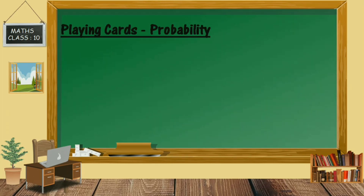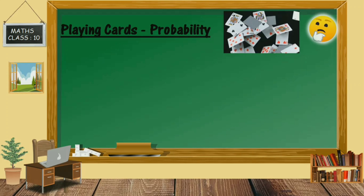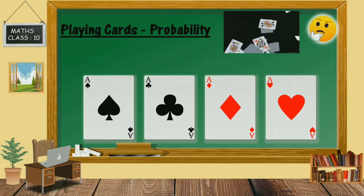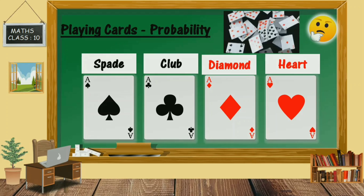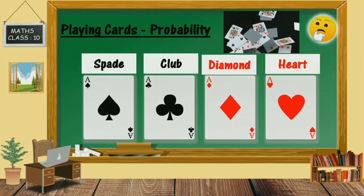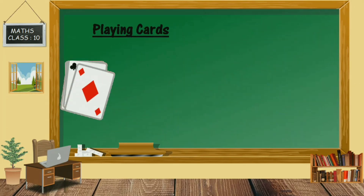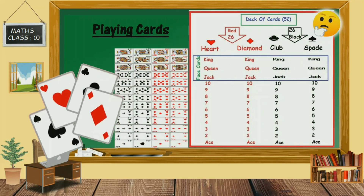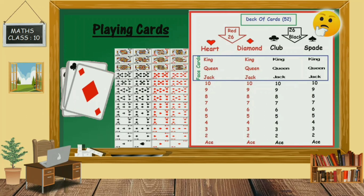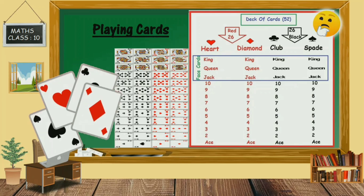Now let's take a look at a deck of playing cards. A deck of playing cards contains 52 cards, and there are 4 suits of 13 cards each: spade, diamond, hearts, and clubs. The spades and clubs are the black cards, and the diamonds and hearts are the red cards. Each suit has the number cards 2, 3, 4, 5, 6, 7, 8, 9, and 10, and then you have jack, queen, king, and ace cards.